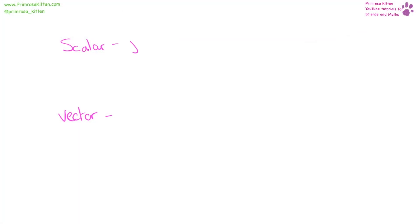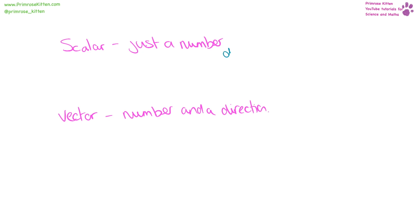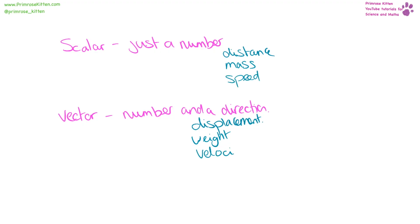A scalar quantity is just a number. A vector quantity is a number and a direction. For example, distance is scalar, but displacement is vector because it's distance in a direction. Mass is scalar, but weight, which is your mass upon the earth, is vector. Speed is scalar, but velocity, which is speed in a certain direction, is vector. Acceleration, force, and momentum are all vector.